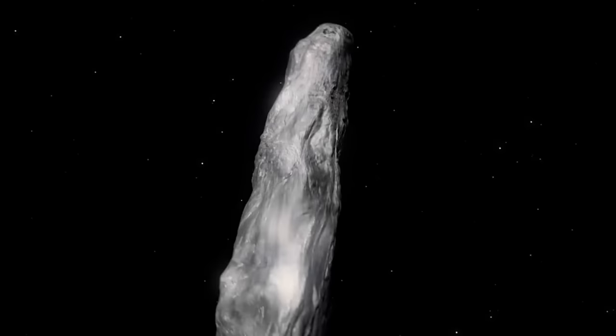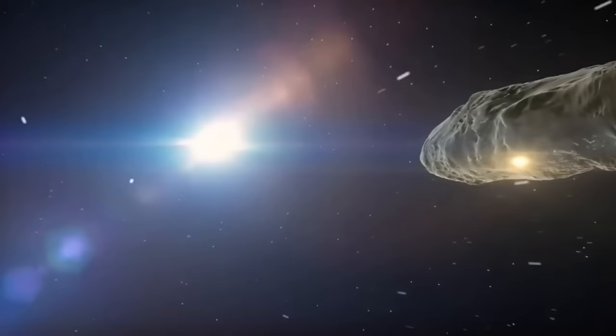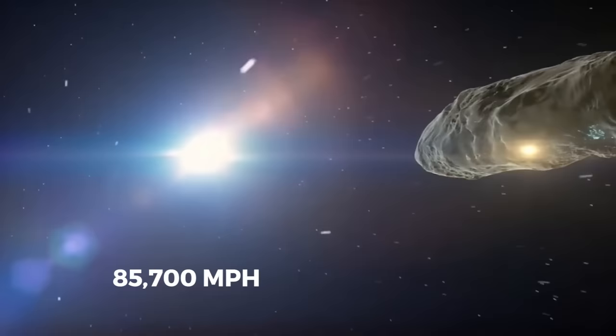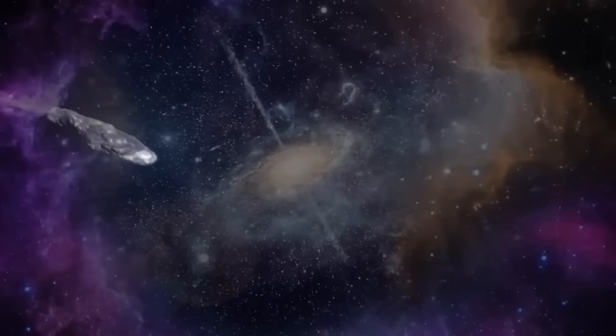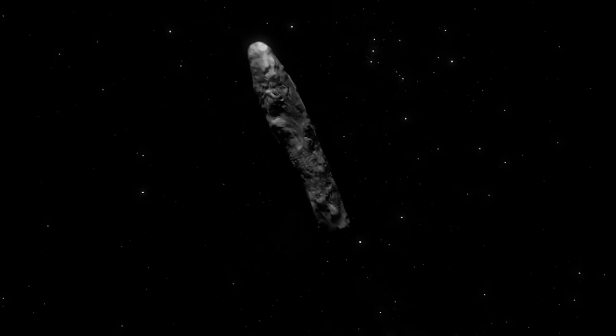Despite its size and composition suggesting a slow pace, it zoomed through the solar system at a staggering 85,700 miles per hour. Its speed varied, initially drawn by the sun's gravity, but then seemingly propelled by an unseen force, adding another layer of mystery. This led to even more confusion, leaving researchers pondering if an unseen force controlled Oumuamua.